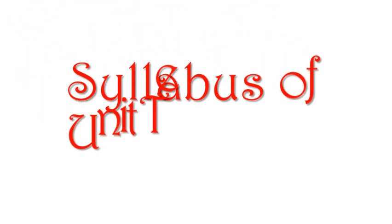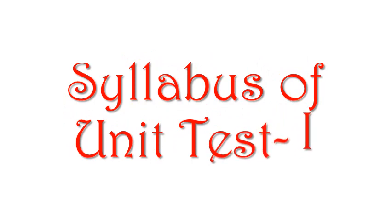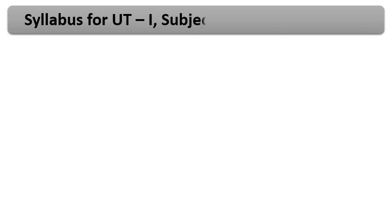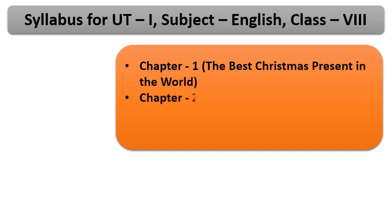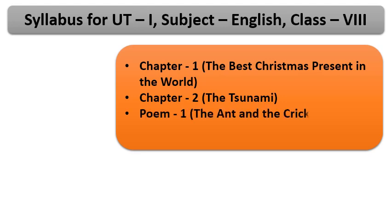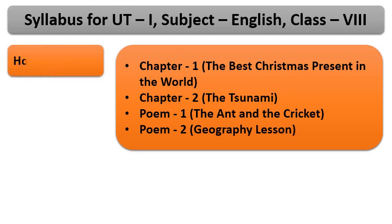Students, let's see what is the syllabus of your unit test 1? The syllabus for UT 1, subject English, class 8, is: Chapter 1, The Best Christmas Present in the World. Chapter 2, The Tsunami. Poem 1, The Ant and the Cricket. Poem 2, Geography Lesson. These all chapters are taken from your main course book, that is, Honeydew.